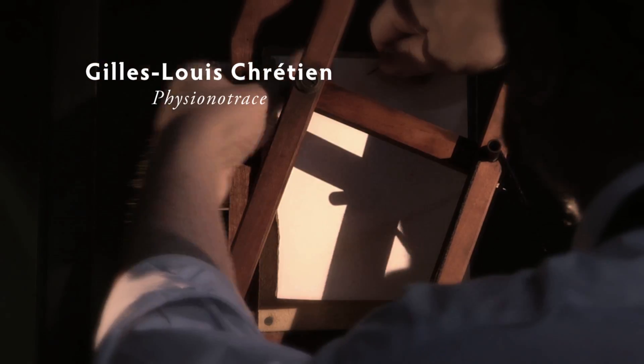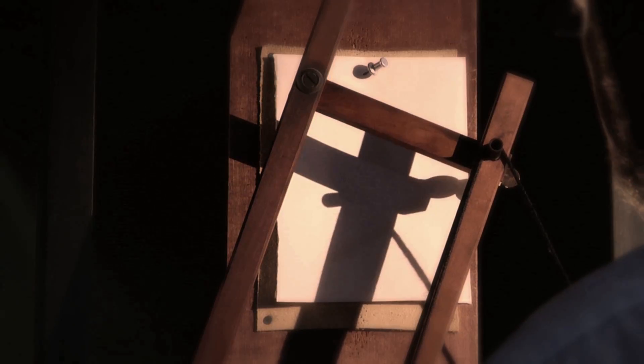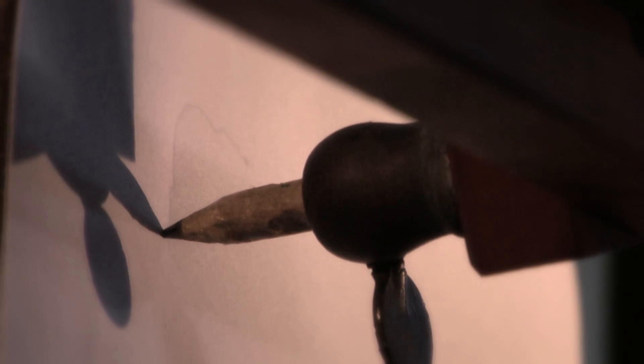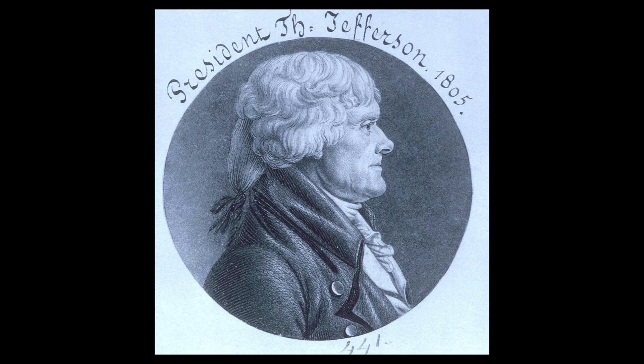There was an inventor by the name of Chrétien who invented a device that would trace the shadow of a person through a series of levers. It would then reduce the picture at the same time. This instrument is called a physionotrace. The thing about the silhouette and the physionotrace that made them different from a painted portrait was that they were mechanical — much more objective portraits of individuals, unlike paintings which were very subjective.